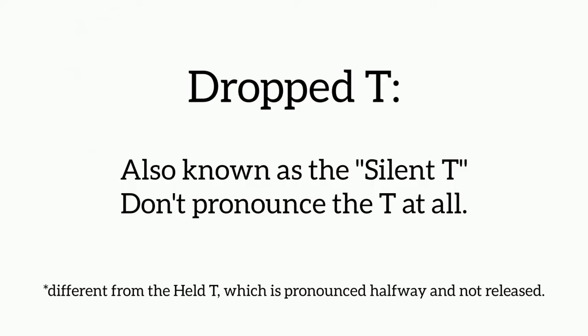In my video on the many different sounds of T, I mentioned the dropped T, where in certain words we don't pronounce the T in order to improve the rhythm of the overall sentence. In today's video, I'll be giving you some examples and patterns of where and how to pronounce the dropped T so that you can improve your accent and understand native English speakers a little bit better.